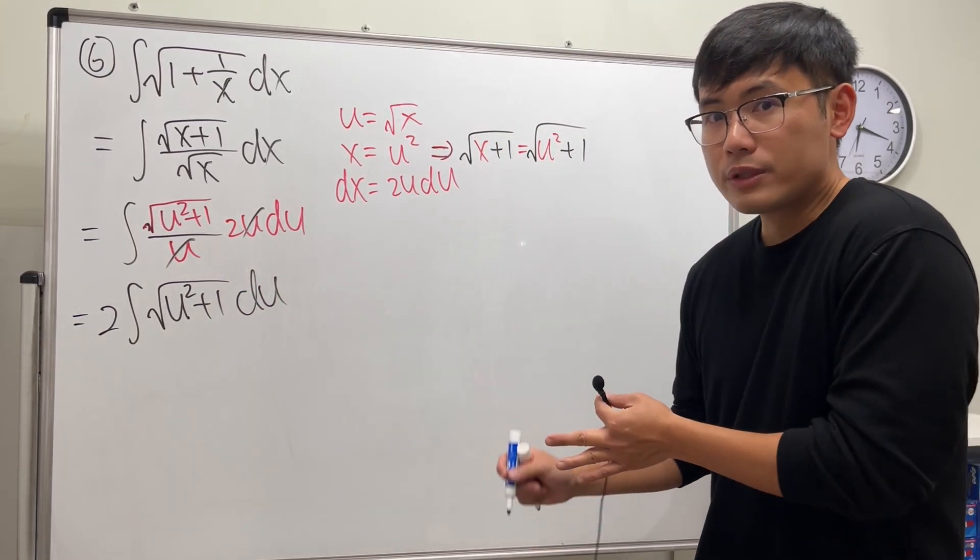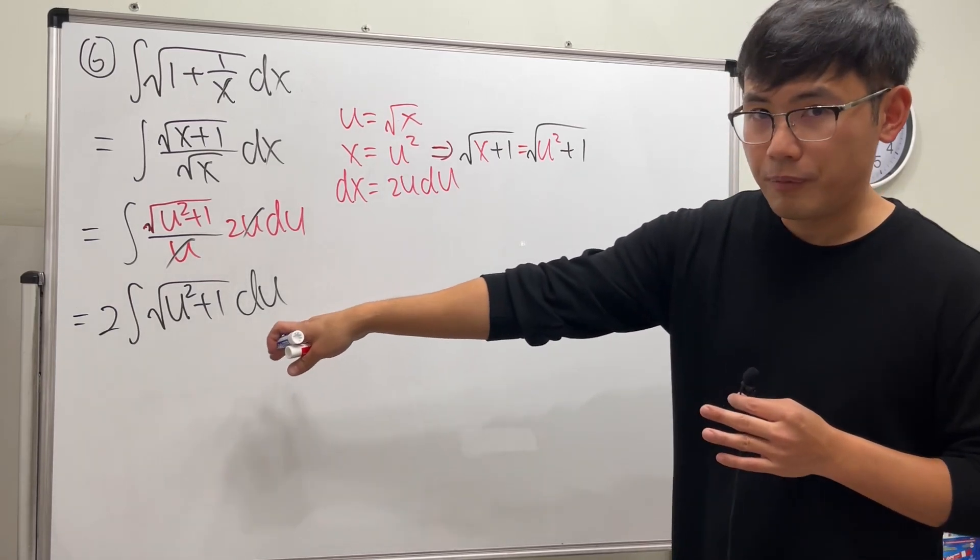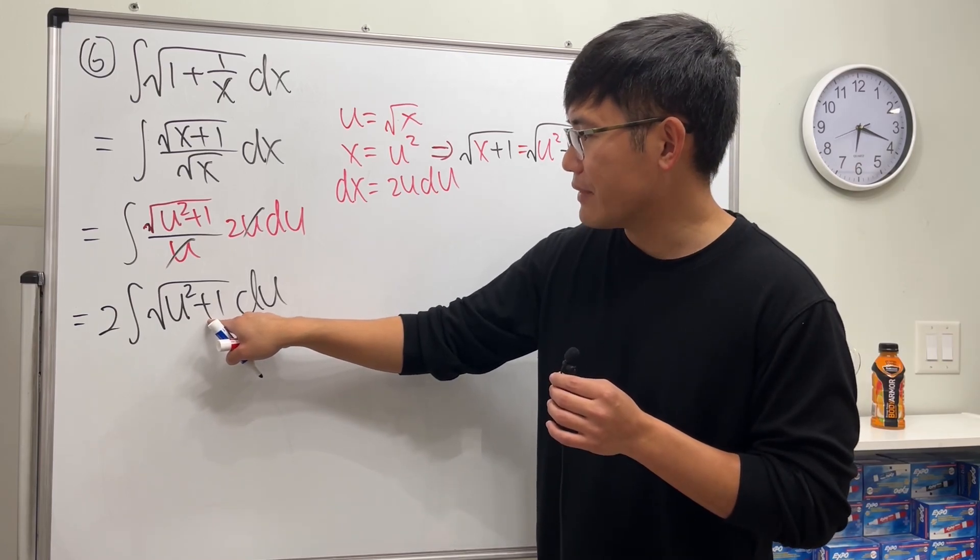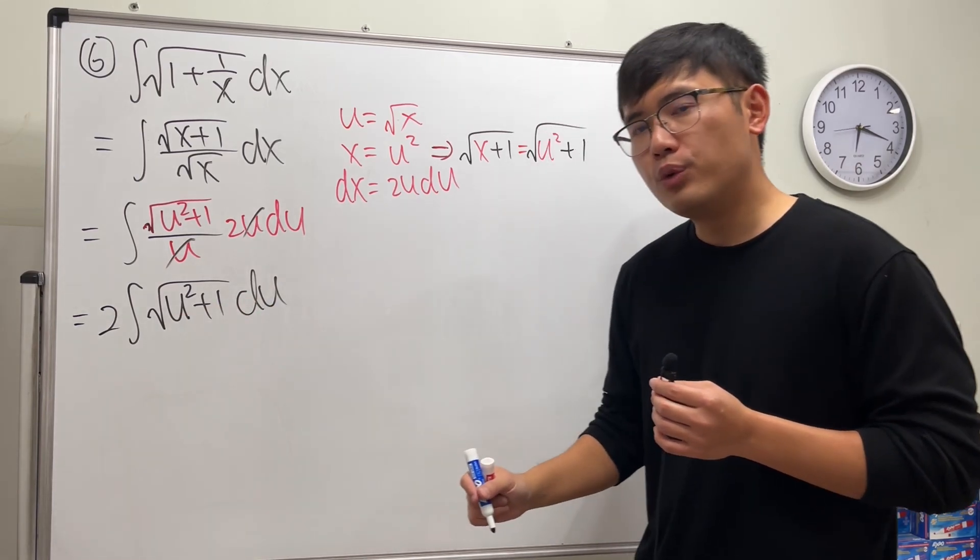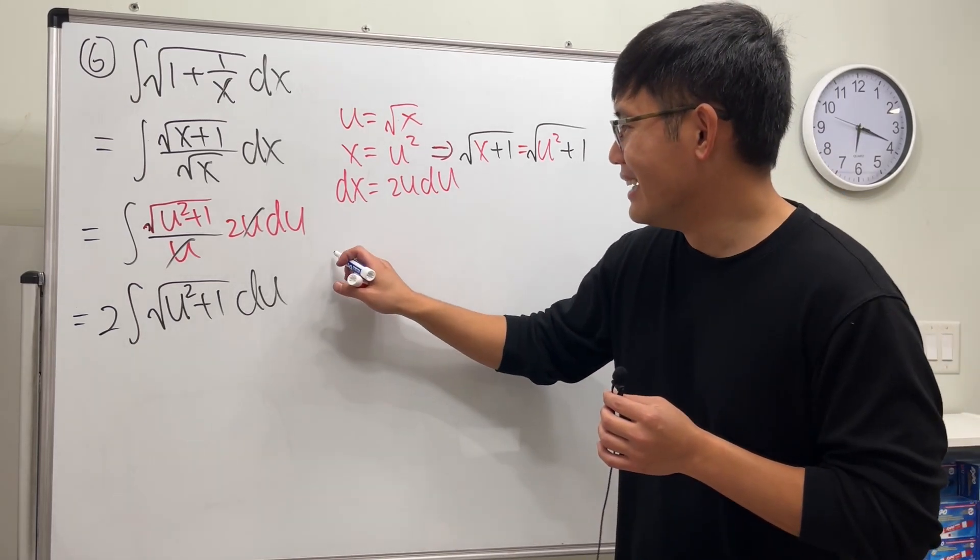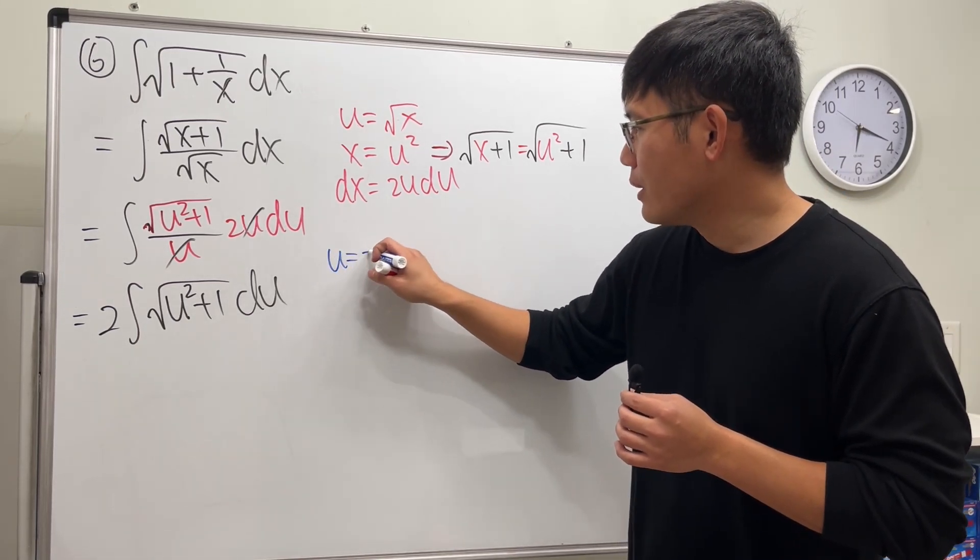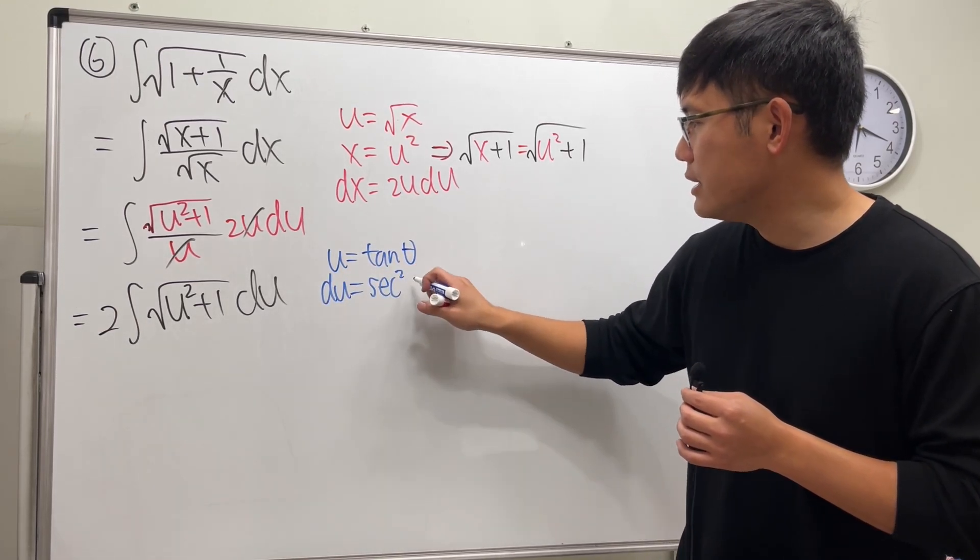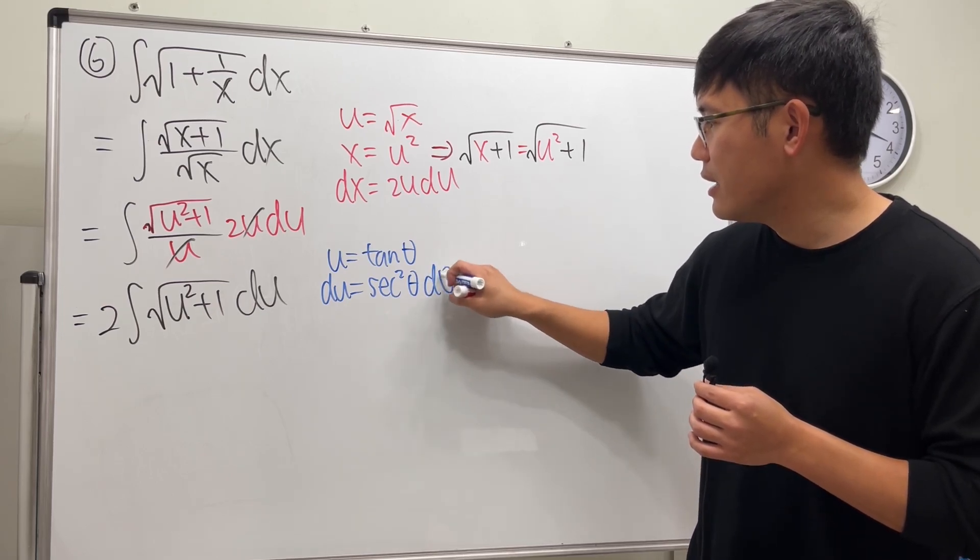Now, I will say for the trig stuff for this right here, it's slightly easier. I'm going to see that because we have the sum of two squares, we will be using tangent. So I'm going to let u equal tangent theta, du will be the derivative of that, which is secant squared theta d theta.